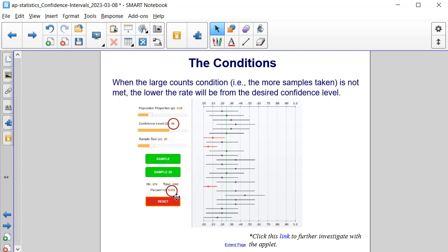We can see here that the percent hit is 87.8% whereas we wanted a confidence level of 95%. And again, this resulted because our sample size is much lower.